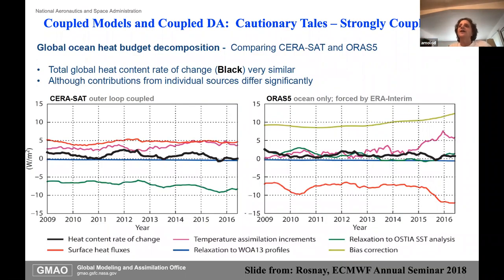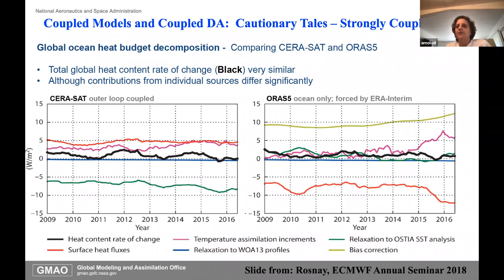Another cautionary tale related to strongly coupled DA is also from the European Centre. If you look at the heat content exchange between the atmosphere and the ocean—the black line—the coupled and uncoupled are very similar. But if you look at the breakdown of which pieces are dominating where and which pieces of the budget are dominating, we see very big differences. What's correct is not particularly clear from the ocean DA point of view.